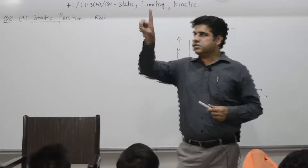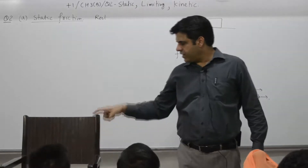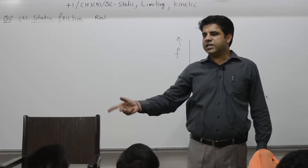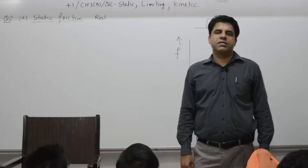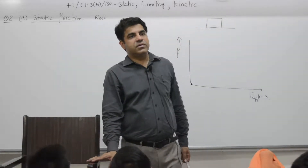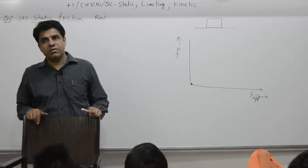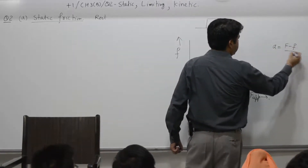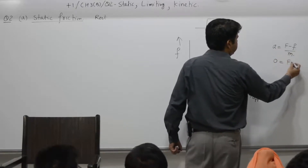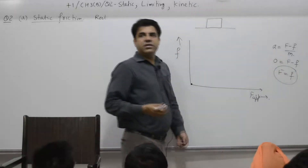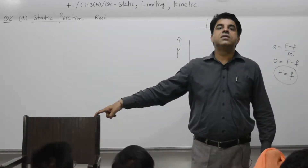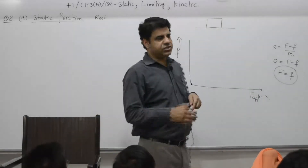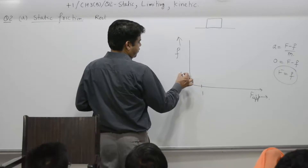Now I apply, say, one unit of force — a single finger. When I try to move it, I am applying a force of one unit, but the chair is still not moving. As per Newton's second law, F = ma, the chair should move, but acceleration is 0. That means F_net = F_applied − F_friction = 0, so friction force is also 1, acting in the opposite direction, making the net force on the object 0.